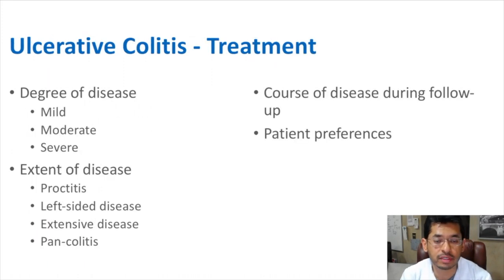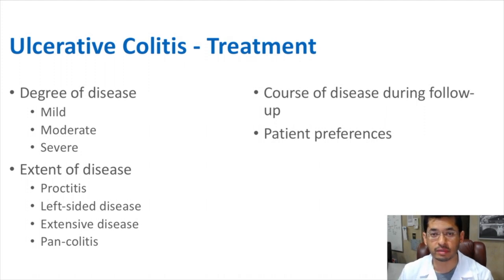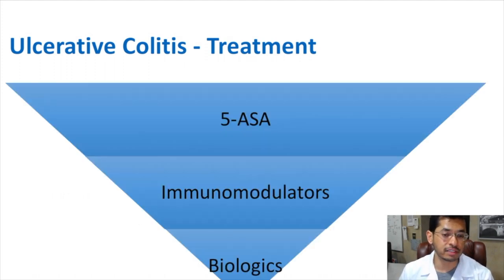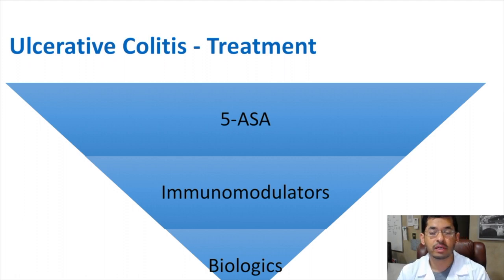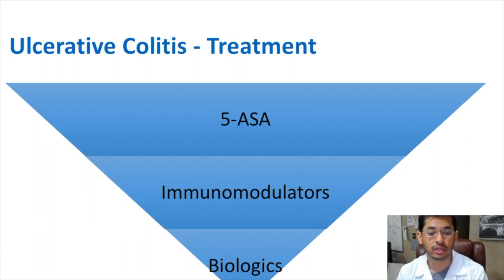In terms of treatment for ulcerative colitis, we categorize treatment based on the degree and extent of the disease. We can see how the disease progresses based on our treatment options and patient preferences. There are three main classes: the 5-ASAs, the immunomodulators, and the biologics. Usually the 5-ASAs are the first-line treatment, which we give to a lot of our patients and they tend to do pretty well.